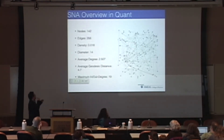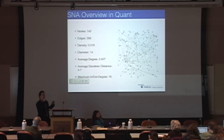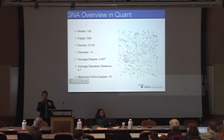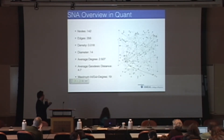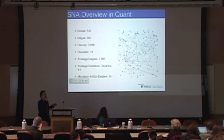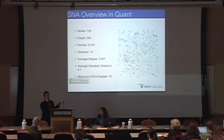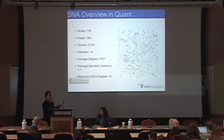Another interesting measure is in-degree and out-degree. If I ask you questions, I have an out-degree of one to you. If you ask me questions, there will be an in-degree of one to me. The max in-degree and out-degree found is 19. You can take a guess about who has the highest in-degree and most out-degree - usually people guess it's the instructor, the TA, or the course support liaison. We'll talk about that later.